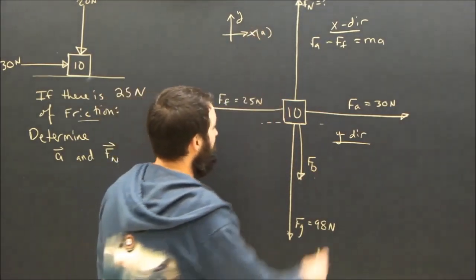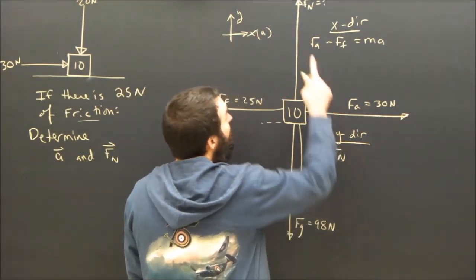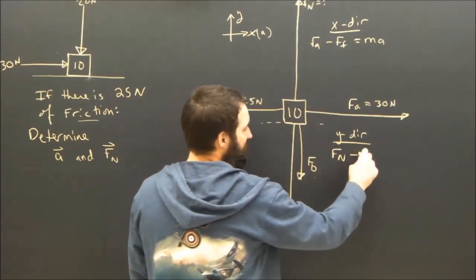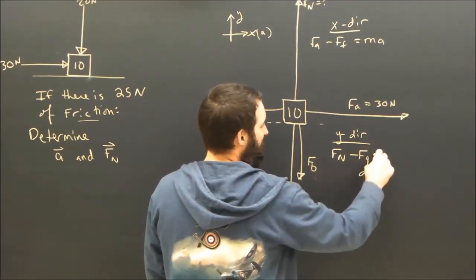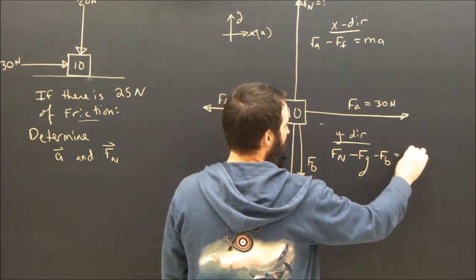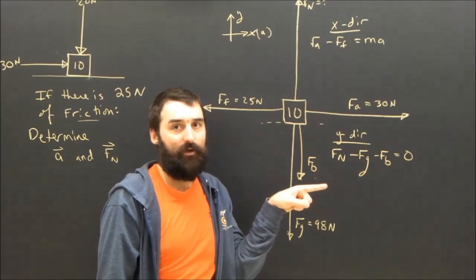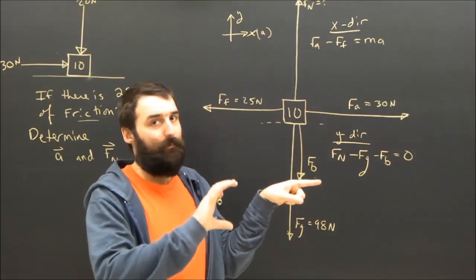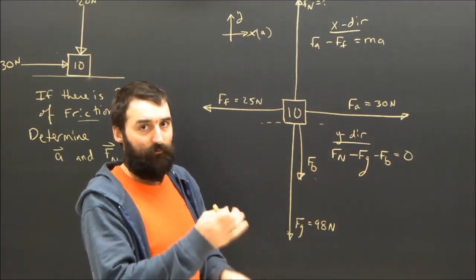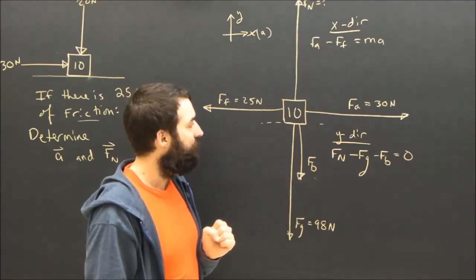The y-equation is going to say Fn. Fn is positive. Fg is down and is negative. Fb is down. And that equals zero. It doesn't equal MA because A is that way. It is not accelerating up or down. So all the y forces have to add up to zero.